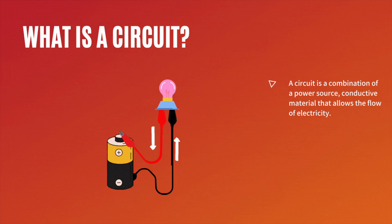What is a circuit? A circuit is a combination of a power source and conductive material in a loop that allows the flow of electricity and a return path for the current.